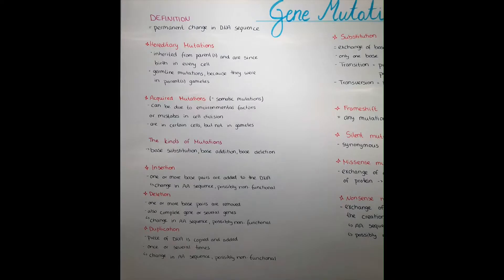Mutations can be either hereditary or acquired. Hereditary mutations are inherited from a parent or parents and are present since birth or since the development of the embryo in every cell. They are also called germline mutations,